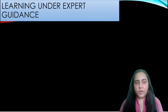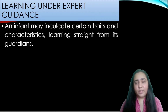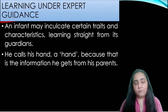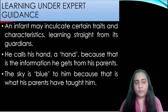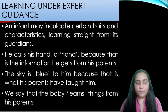The first one is learning under expert guidance. An infant may inculcate certain traits and characteristics learning straight from its guardians — a baby learns from the parents. He calls his hand a hand because that is the information he gets from his parents. The sky is blue to him because that is what his parents have taught him. If the parents are talking to the child in English, they are going to say the sky is blue, and that's how the child knows to call that color blue.